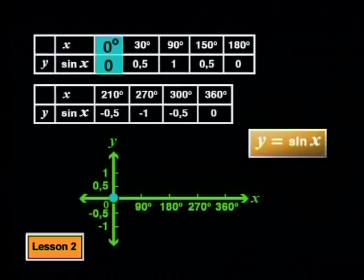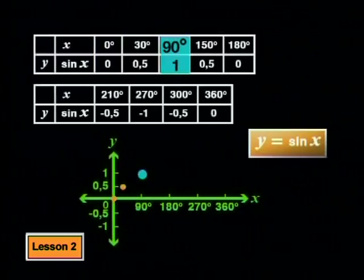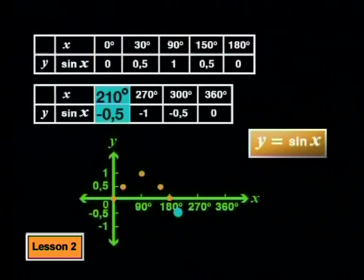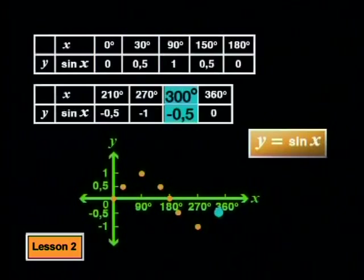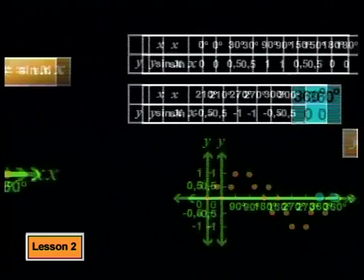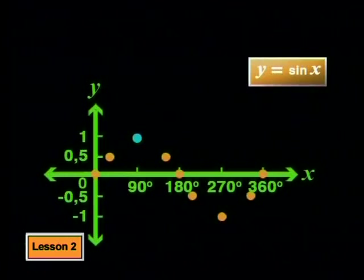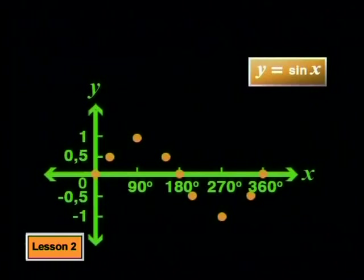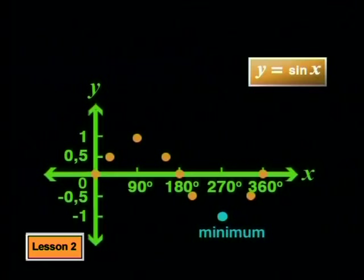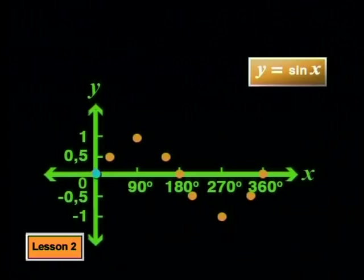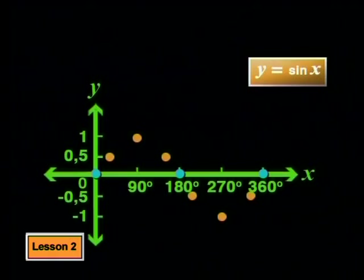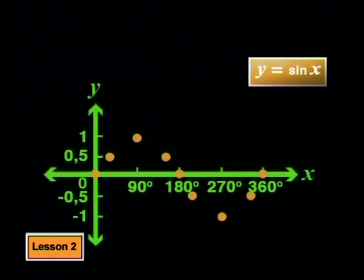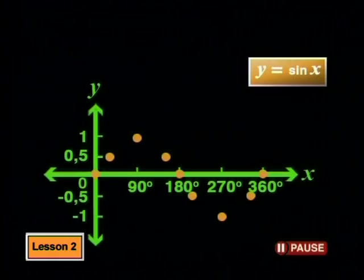Now, to sketch the graph, we can plot our points from our table of values. Have a look at the plotted points. This point at y equal to 1 is a maximum point and this point at negative 1 is a minimum point. We also see that for x equal to 0 degrees, 180 degrees and 360 degrees, sine x is equal to 0.